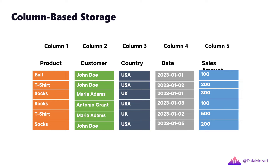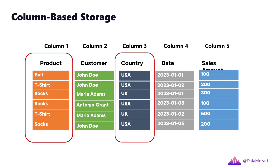Let's now examine how the column store works. As you may assume, the approach is quite different. In this case, each column is a separate entity, meaning each column is physically separated from other columns. Going back to our previous business question, the engine can now scan only those columns that are needed by the query, which are product and country, while skipping scanning the unnecessary columns. And in most cases, this should improve the performance of the analytical queries.